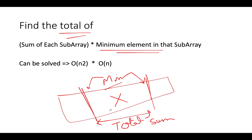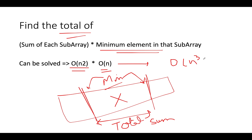Now let's talk about the time complexity of the naive approach. For identifying each and every subarray, the time complexity would be O(n²). For finding the sum of that particular subarray, the time complexity would be O(n), and for finding the minimum element as well, the time complexity would be O(n). So the total time complexity becomes O(n³), which is quite expensive. Can we do something better? The answer is yes.